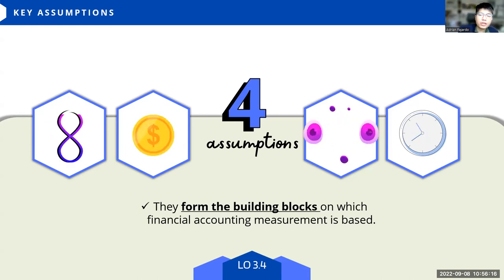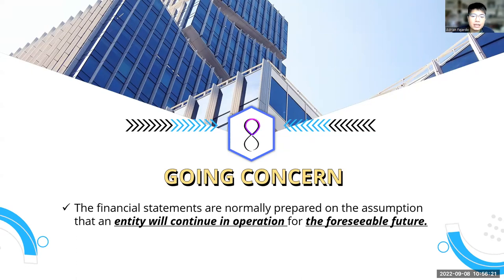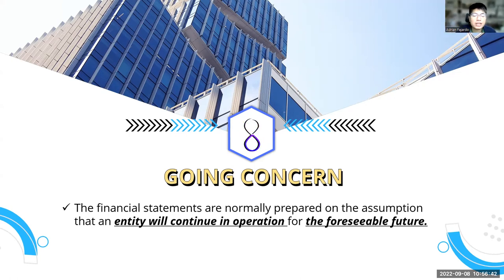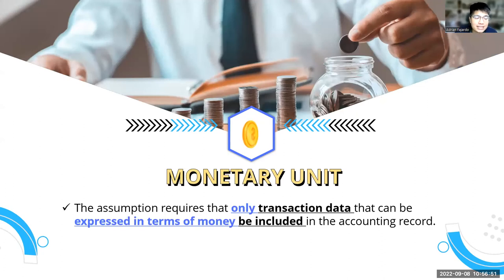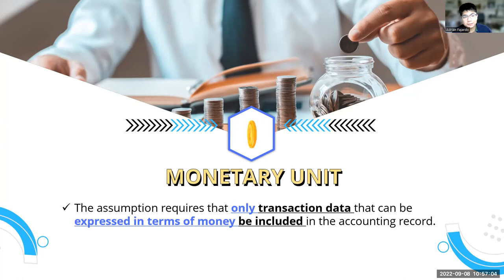The first assumption is going concern: financial statements are normally prepared on the assumption that an entity will continue in operation for the foreseeable future. The assumption is that they won't go bankrupt next year — they'll continue operations indefinitely. The second assumption is monetary unit: only transactions expressible in terms of money should be included in the recording process. Going back to the definition of an economic event — it must be measurable in monetary units, and that is because of this monetary unit assumption.